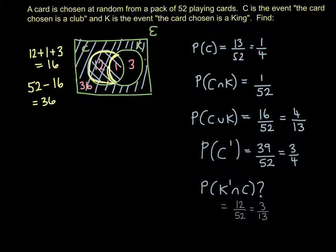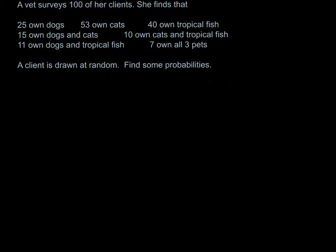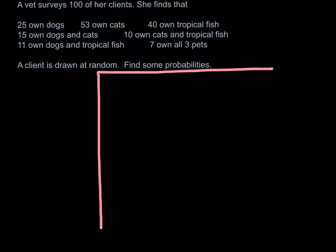One more example. So this example will help you with the later questions in the exercise. It's quite a complicated one because you've got a vet surveying a hundred of her clients, and it's about them owning dogs, cats, and tropical fish. Obviously there'll be some people that don't own any of those three as well. So we've got our Venn diagram because we're dealing with three events. We're going to have to have three circles.